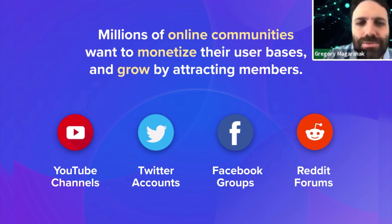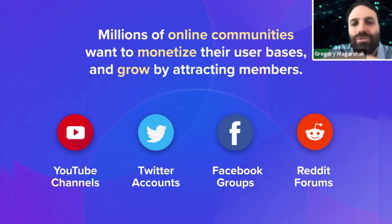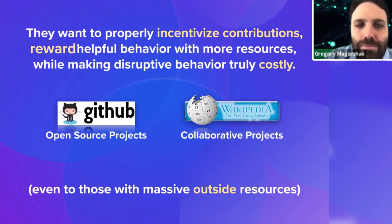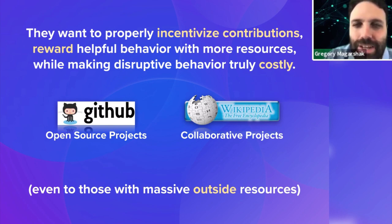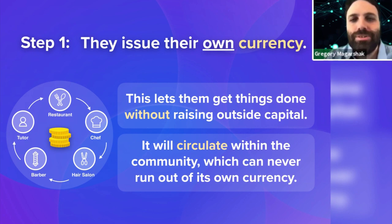They're trying to monetize their user base, trying to get money from all these followers and use that money to grow their communities. If you have a collaborative project like Wikipedia, you'd like to reward people's contributions, and you want to make it costly to disrupt and vandalize pages. So you need to have a system where there's an internal currency.